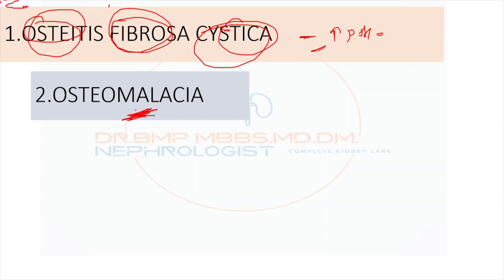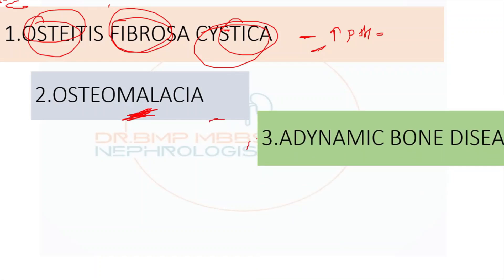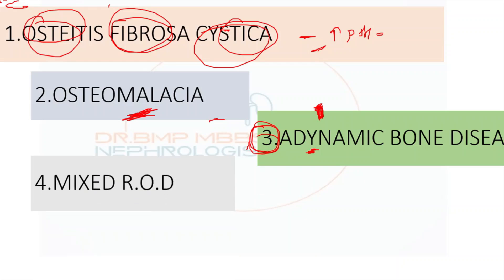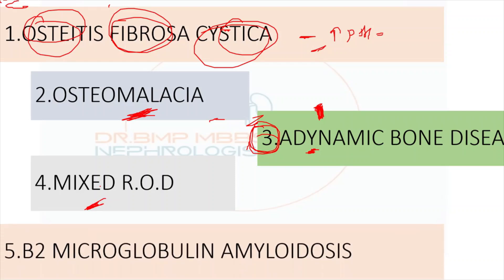Sometimes mineralization is more affected — the manifestation is like osteomalacia. In adynamic bone disease, the patient has been overtreated with calcium, totally suppressing the parathyroid. Without PTH, there is no bone resorption; the bone becomes like thick chalk and is more prone to fracture. This occurs with excessive calcium and vitamin D supplementation. Sometimes the patient will have a mixed picture — both low mineralization and low turnover.